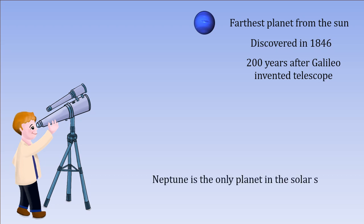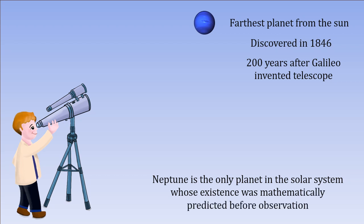Neptune is the only planet in the solar system whose existence was mathematically predicted before observation. This is the story of Neptune and the tale of the fortuitous events leading to its discovery.